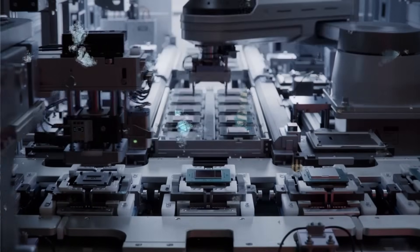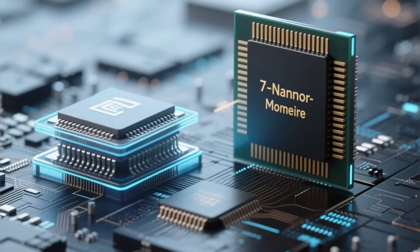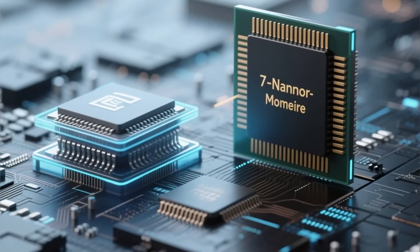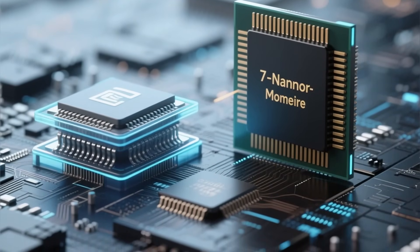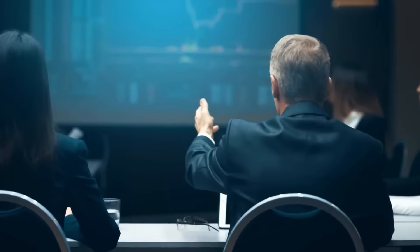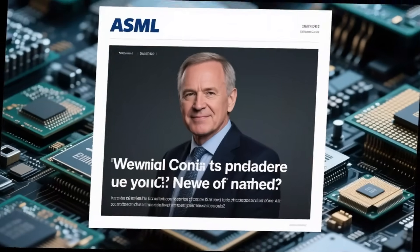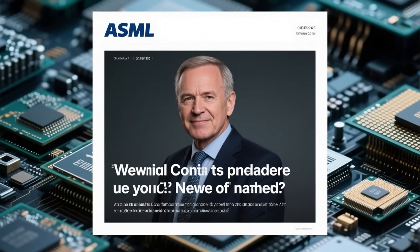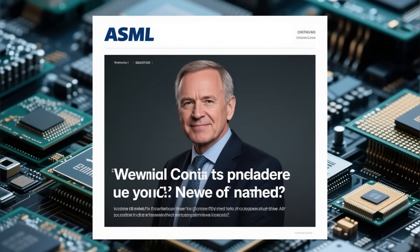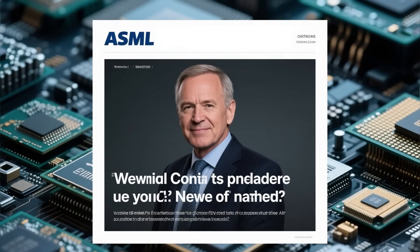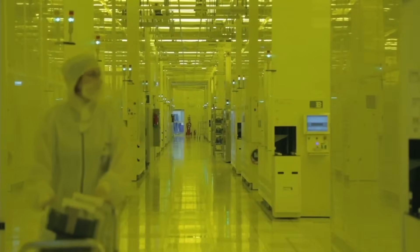Without EUV technology, producing chips smaller than 7 nanometers becomes nearly impossible using conventional methods. Industry experts confidently predicted China would need 10-15 years to catch up, if they could catch up at all. The ASML CEO himself stated in December 2024 that China remained at least a decade behind without access to EUV equipment. That assessment is aging badly.